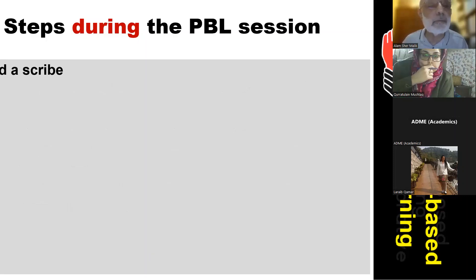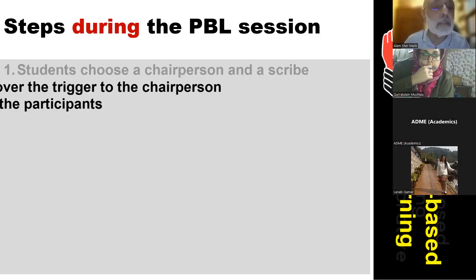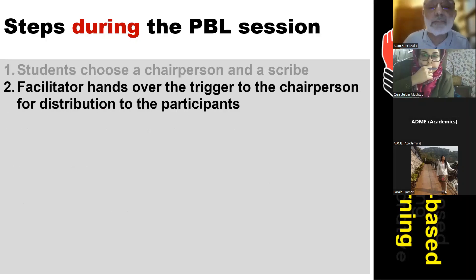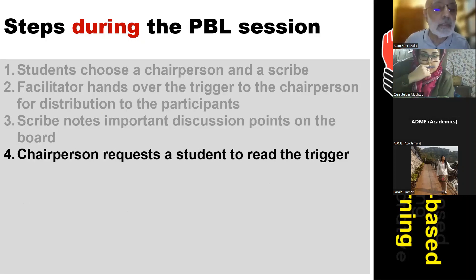Steps during the PBL session: students choose a chairperson and a scribe. The facilitator hands over the trigger to the chairperson for distribution to the participants. The scribe notes important discussion points on the board, and the chairperson requests a student to read the trigger.